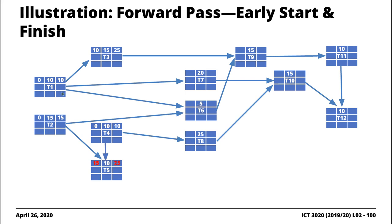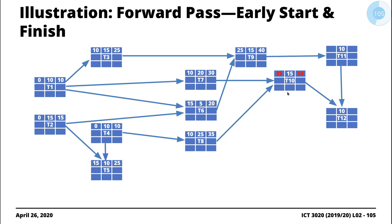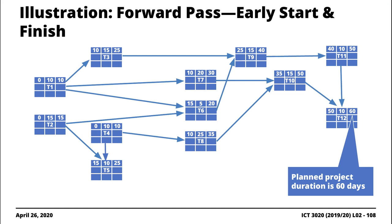T6 depends on T1 and T2; maximum of 10 and 15 is 15. T7 has one predecessor T1, so we pull 10. T8 depends on T4, so we pull 10. T9 depends on T3 and T6; maximum is 25. T10 depends on T7 and T8; maximum is 35. T11 depends on T9, so we pull 40. T12 depends on T10 and T11; maximum is 50; 50 plus 10 gives 60. This 60 is our planned project duration.